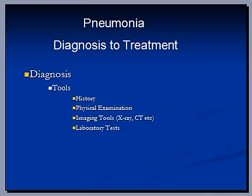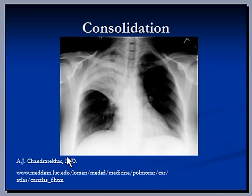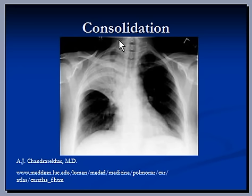The first picture shows consolidation in the right superior lobe, and you can also see air bronchogram. These black lines are bronchial branches that have air in them, and they are visible because of consolidation in the background. The background is opaque and the bronchial branches have air in them, which is why they are visible.